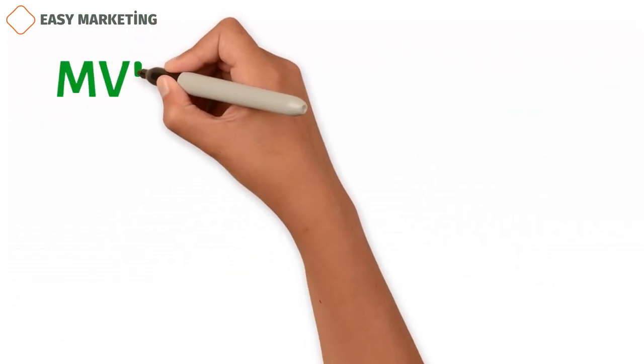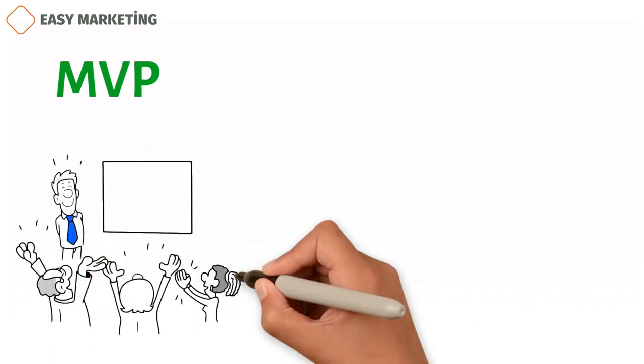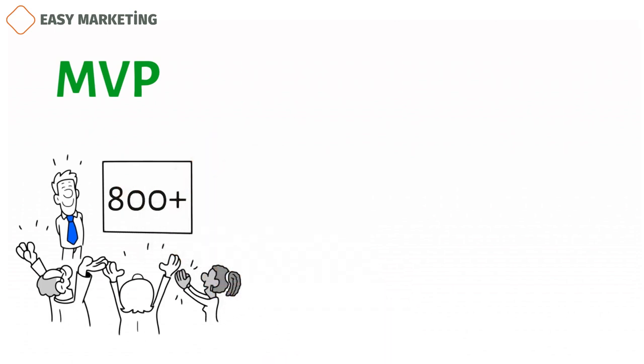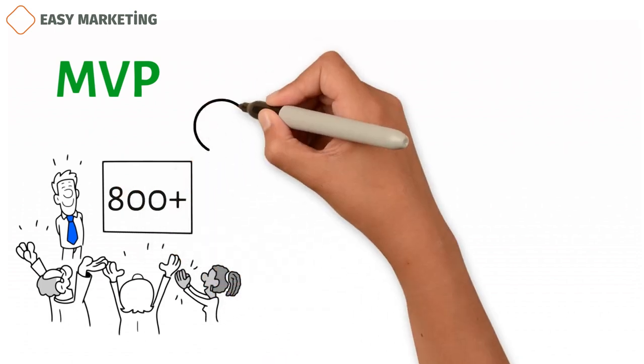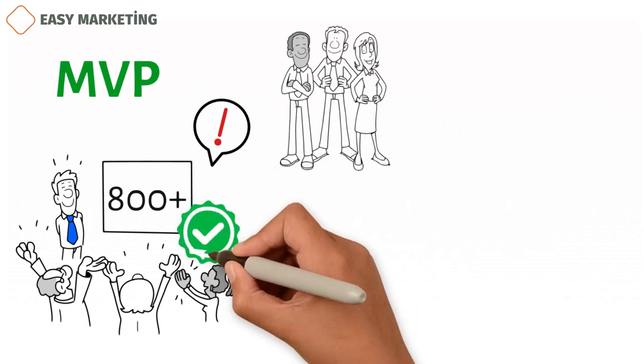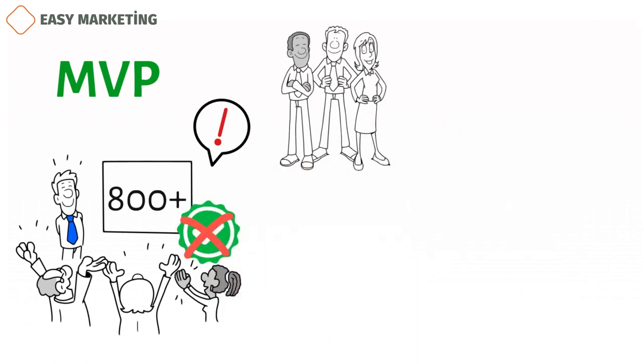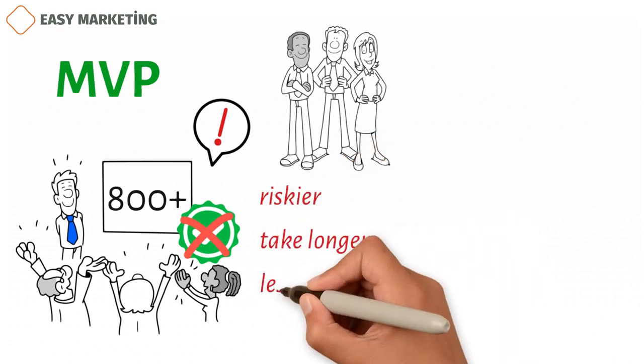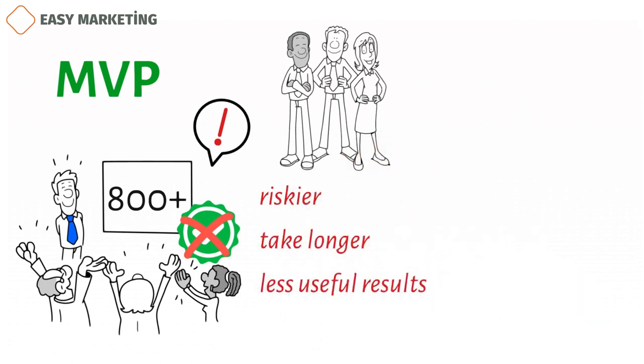Frank Robinson's minimum viable product definition says that teams will sometimes say things like, we added 800 new features. Problem. Even some people are proud of their feature count. Adding features doesn't always make the business case better though. It might be riskier, take longer, and produce less useful results.